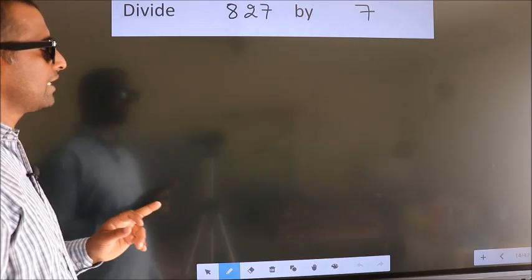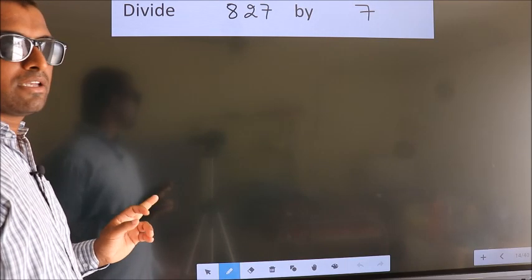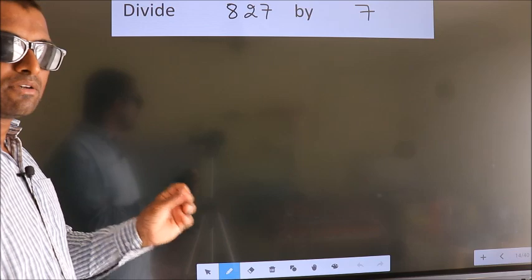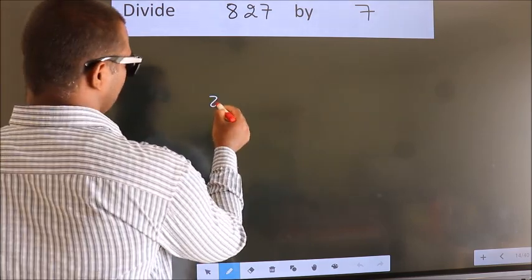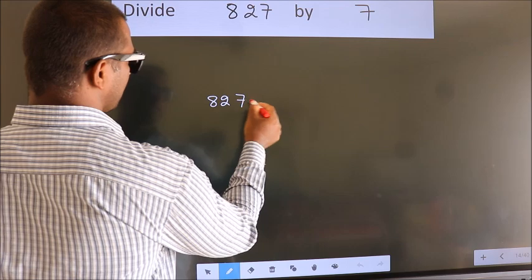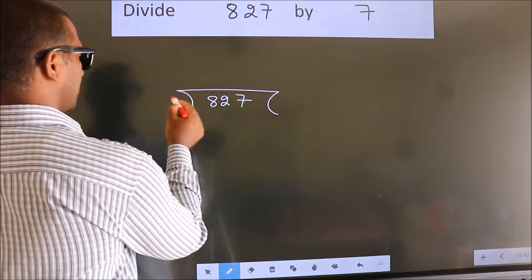Divide 827 by 7. To do this division, we should frame it in this way. 827 here, 7 here.